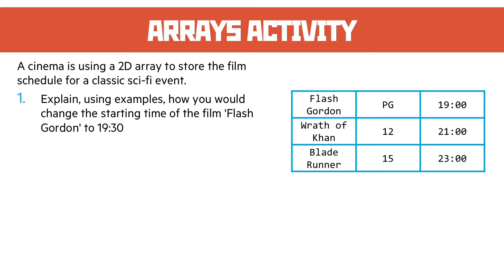We've got a cinema who's using a 2D array to store the film schedule for a classic sci-fi event. We've got some brilliant films up there — Flash Gordon, Wrath of Khan, and Blade Runner. Question one: explain using examples how you would change the starting time of the film Flash Gordon to 1930.